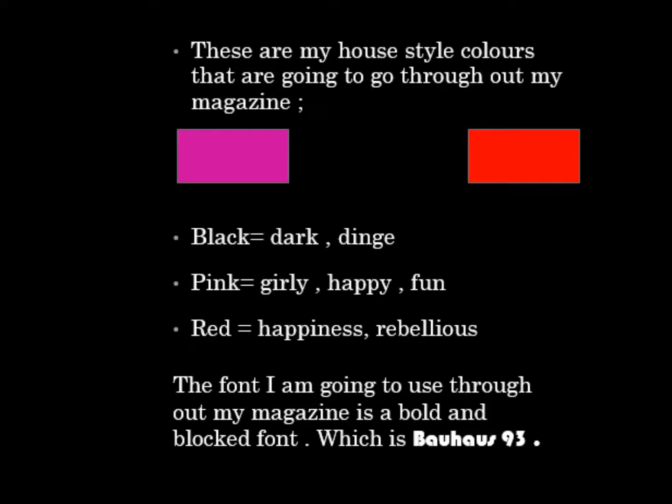The three house style colours I am going to use are red, pink and black. Red connotes happiness, rebelliousness, and is very masculine for the indie side of my magazine. The red also connotes love and danger, and as my magazine is aimed at females the red fits in well with the love side. I have also chosen pink as it is really girly, happy and fun, because the magazine is aimed at girls. The black I have chosen because it is dark and grungy, which is good to create the indie side of my magazine as well as the pop. I also want my magazine to come across as a luxury, well-designed magazine.